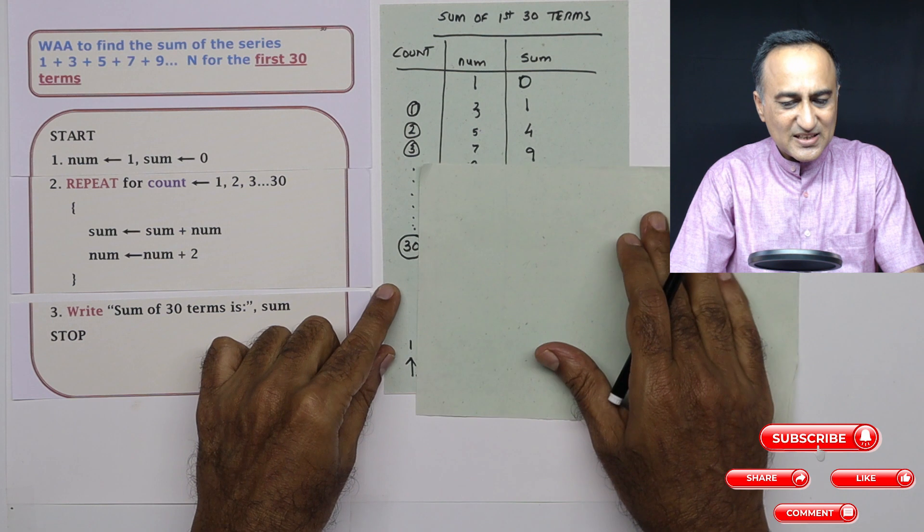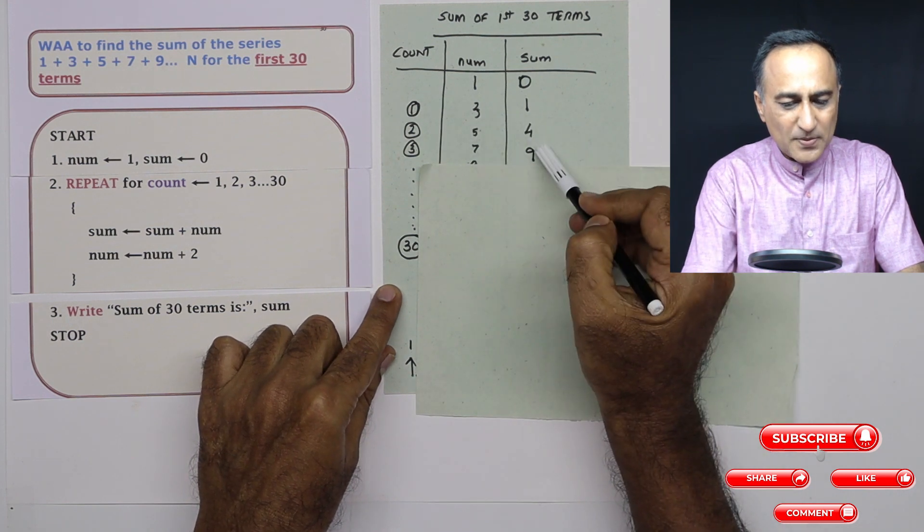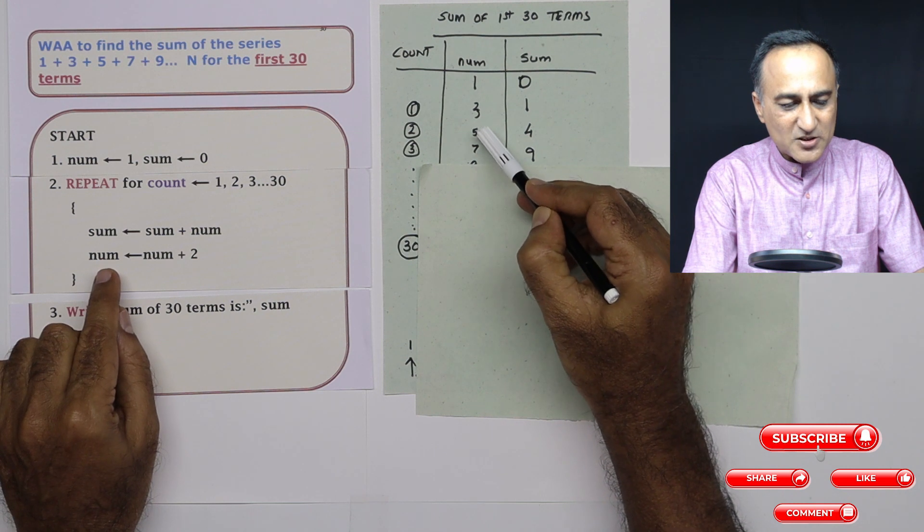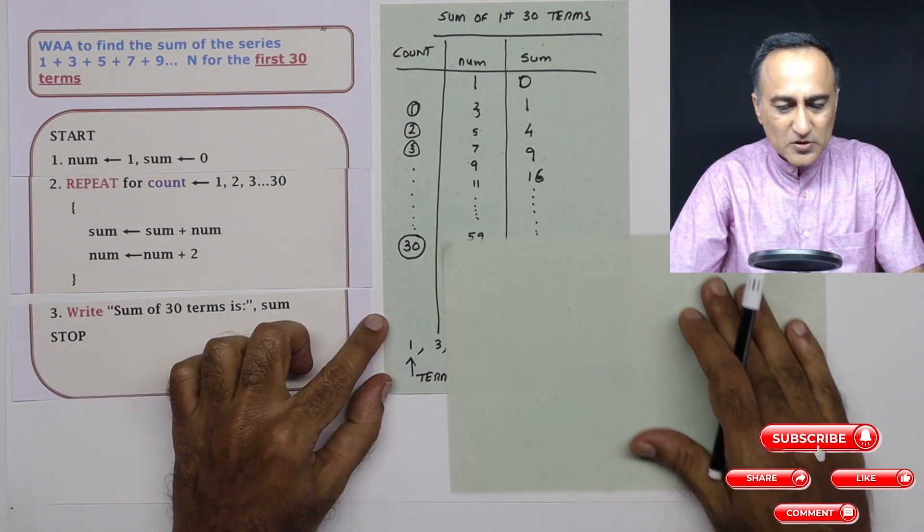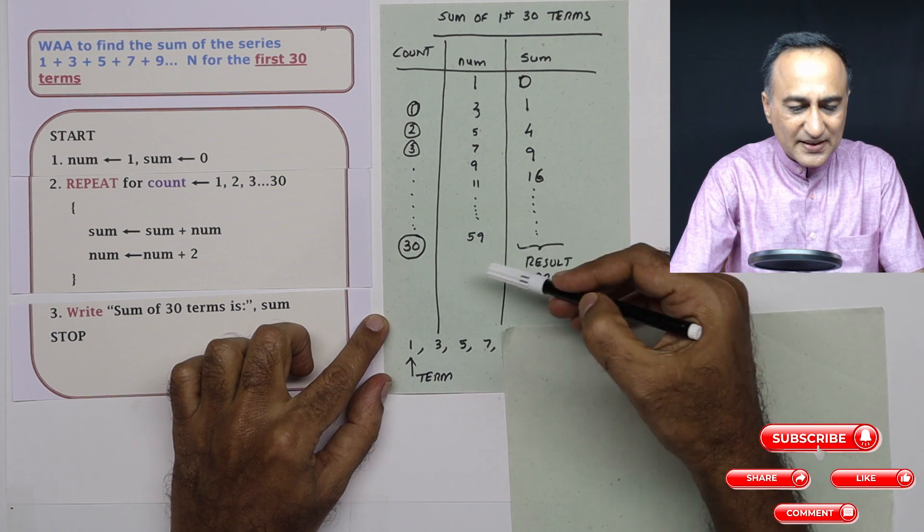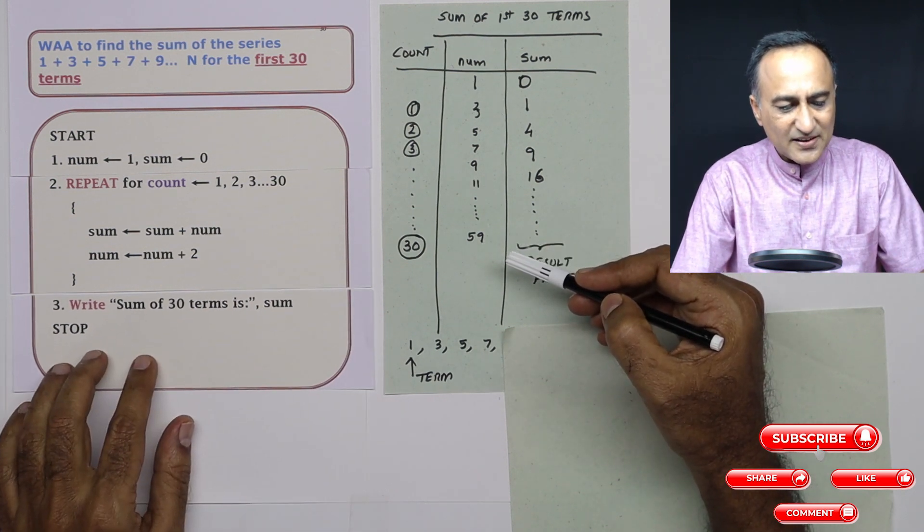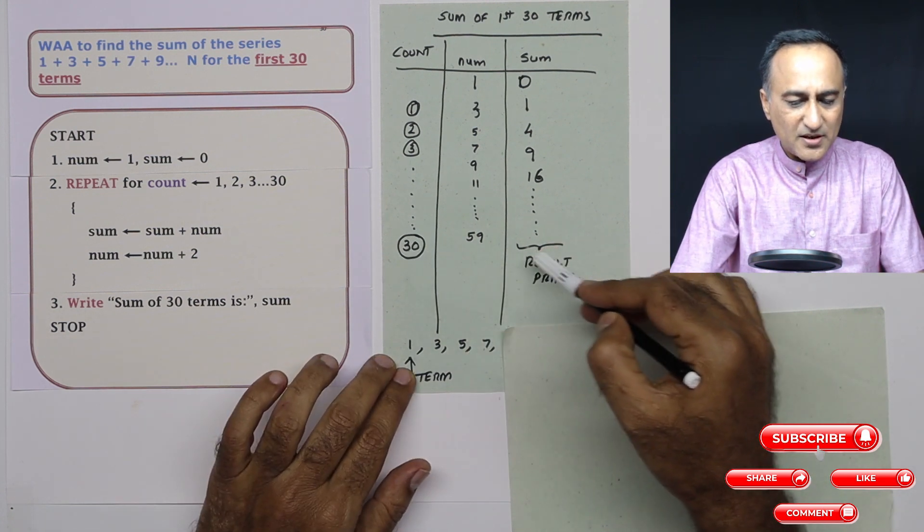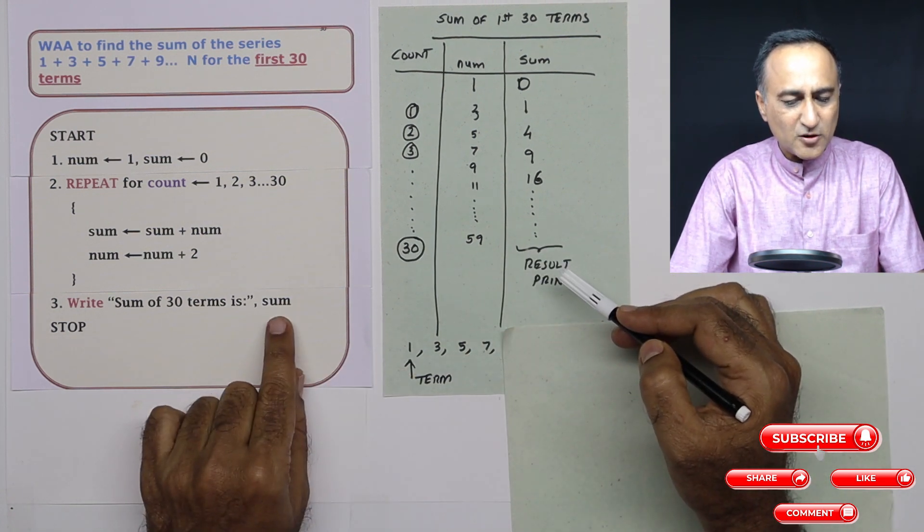Then when count is 3, first what happens is this plus this, 4 plus 5, 9 sum becomes 9. Then number becomes 5 plus 2, it becomes 7. So this process will keep repeating till count reaches 30 terms. The minute count reaches 30 terms here, it is going to print the result of sum.